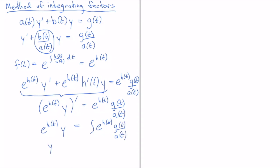And finally I can write down my solution y of t is equal to e to the minus h of t all multiplied by this antiderivative.